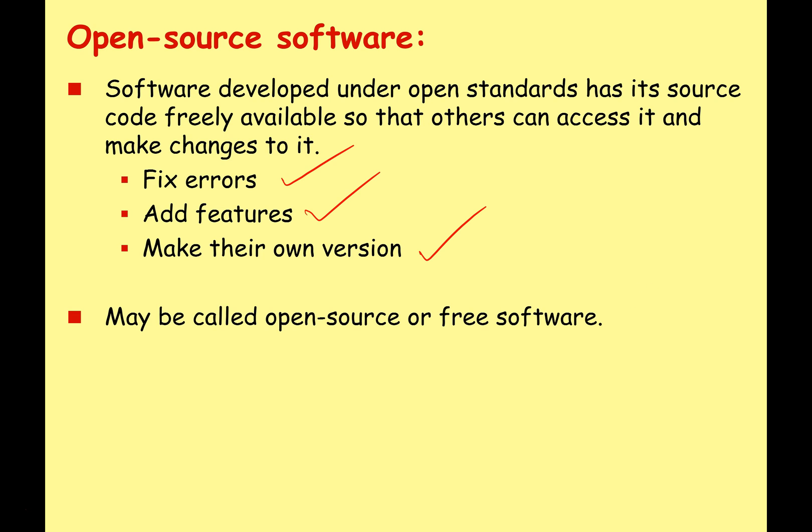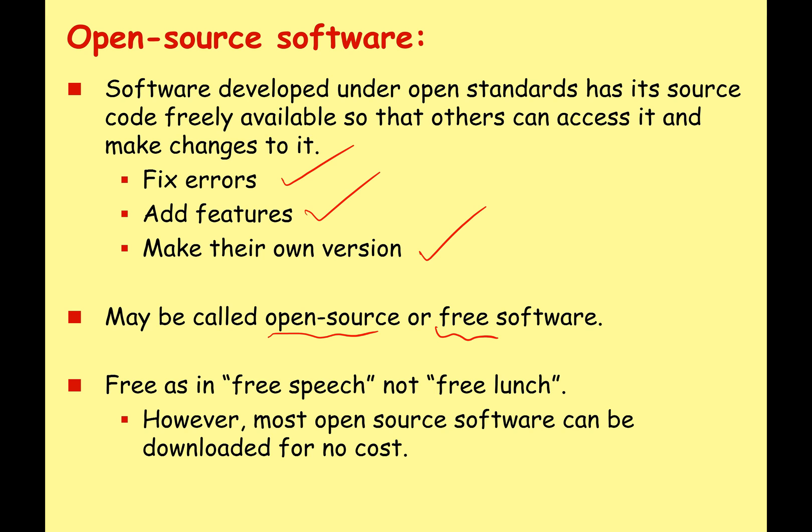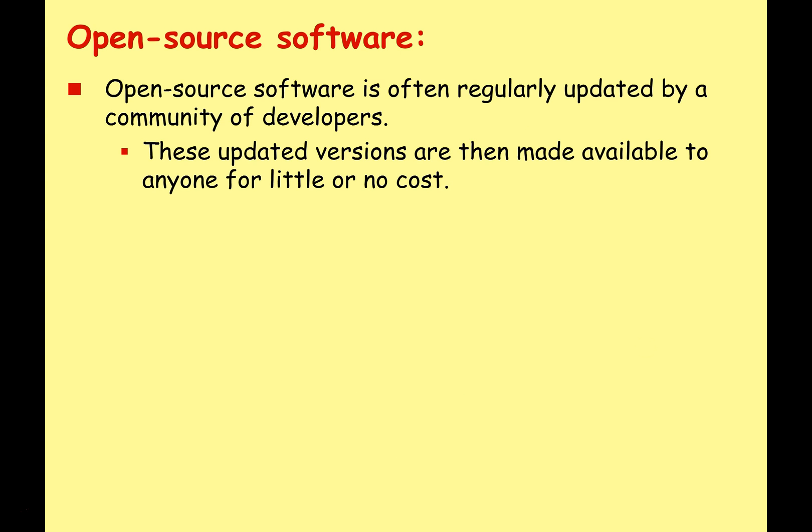Open source software is sometimes called free software, but we have to be careful here — this is free as in free speech, not a free lunch. However, most open source software can be downloaded for the cost of £0.00. It doesn't always have to be free — sometimes it is charged for. Often companies might have the software available for free but charge big businesses for technical support, and that way they can still make a profit. But generally most open source software is free of cost. Open source software is often regularly updated by a community of developers, with updated versions made available to anyone for little or no cost.